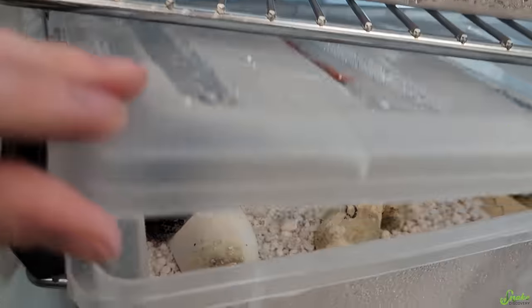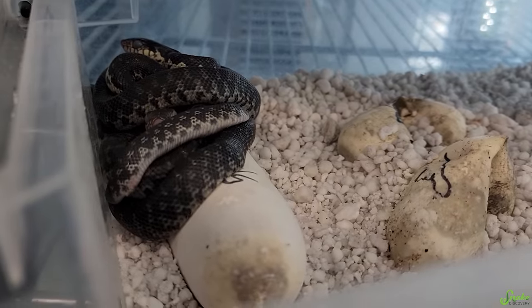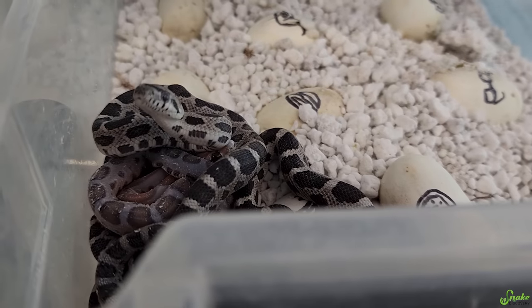We have baby Madagascar giant dog noses hatching. Those are for a different video. But I also just noticed in here we have another clutch from Daisy and Buck. We have baby rat snakes hatching.